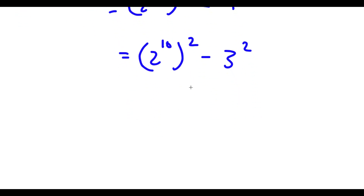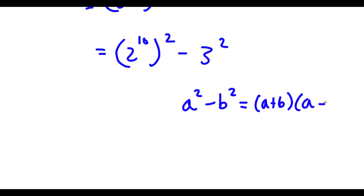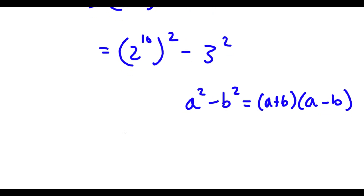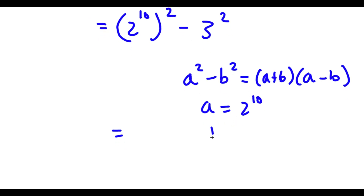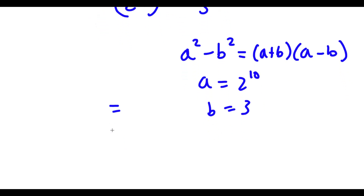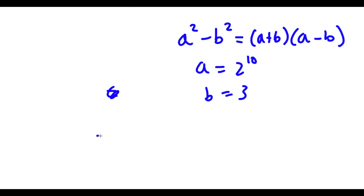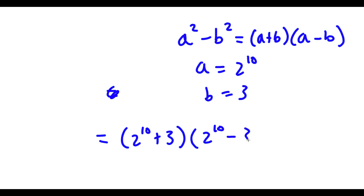Now if I have something in the form a squared minus b squared, this is equal to a plus b times a minus b. So in this case a is equal to 2 to the power of 10 and b is equal to 3. So I would have 2 to the power of 10 plus 3, times 2 to the power of 10 minus 3.